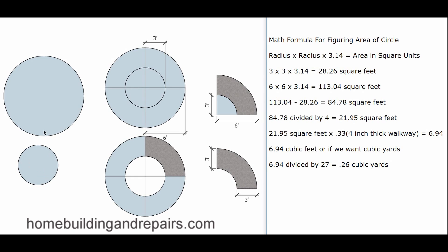So here we have a three-foot circle and a six-foot circle. The six-foot area would be the segment we're trying to make from the sidewalk. It's three foot by three foot, and if we drew a line across it would be three foot. The inside distance is three foot and the outside of the segment of the circle is six foot.